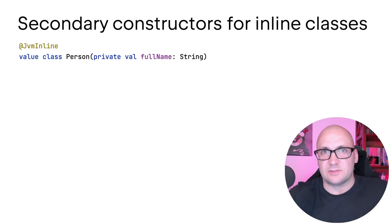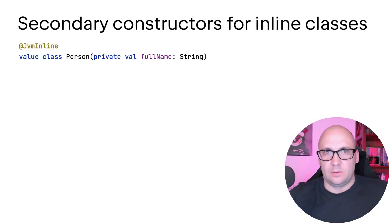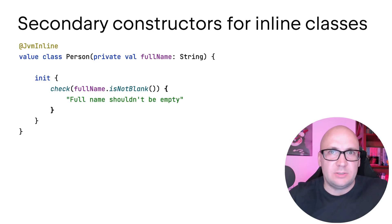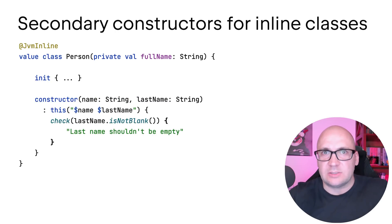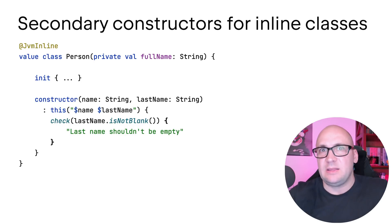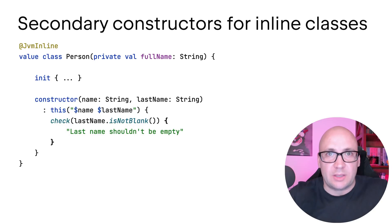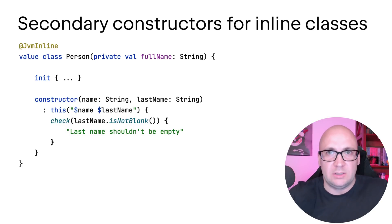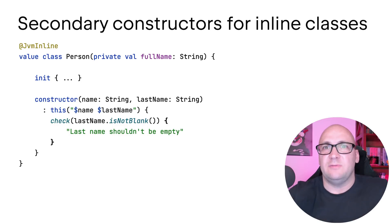Secondary constructors for inline classes is now a stable language feature. Inline classes only accept one parameter in the primary constructor. With secondary constructors, it is now possible to use multiple parameters, since at the end you will call the primary constructor with a single parameter anyway. For example, you can combine multiple parameters into one for the primary constructor, and more importantly, you can validate the parameters one by one.